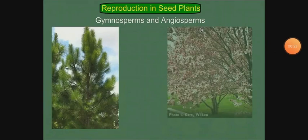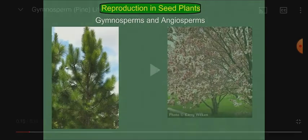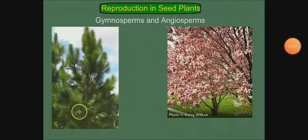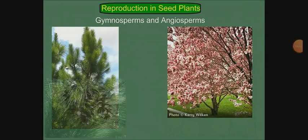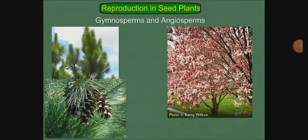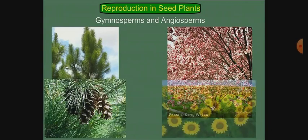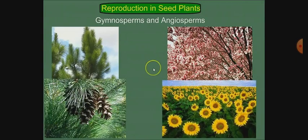We know that gymnosperms do not have flowers and their seeds are naked, whereas angiosperms are flowering plants and their seeds are enclosed in the ovary. In gymnosperms, the reproductive structure is called a woody cone, whereas in angiosperms the reproductive structure is a flower.